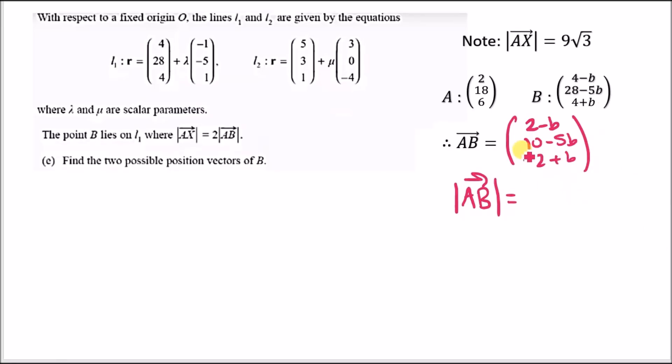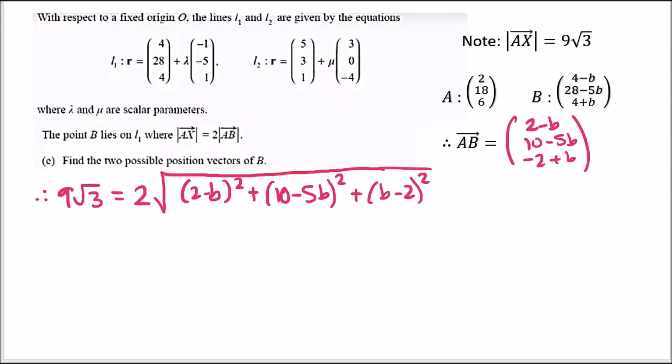Now we take the absolute value of AB. Solving the entire equation AX equals 2 times AB, we have 9 root 3 equals 2 times the square root of every single AB term squared. So we've got 2 minus beta squared plus 10 minus 5 beta squared plus beta minus 2 squared.